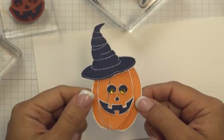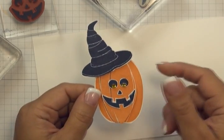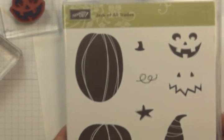I'm going to start by showing you how to create this little three-dimensional Jack O'Lantern. I'm using Stampin' Up's Jack of All Trades stamp set. I've got the largest of the pumpkins.